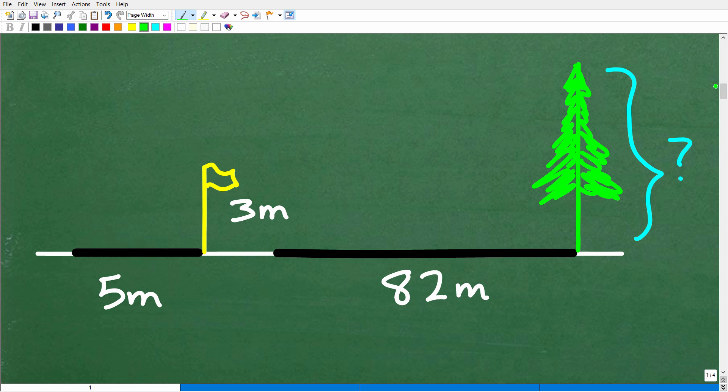Here is the ground. Here is our flagpole, and here is our tree. So we have a flagpole. It's three meters tall. It's casting a shadow of five meters. And we have this tree. We don't know how tall the tree is. That is the question, but it's casting a shadow of 82 meters.